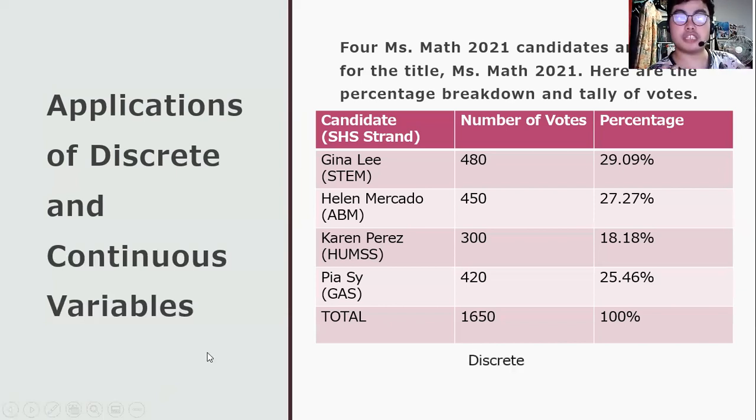The number of votes is discrete. Why? Because votes are made by people and each of the votes is being described by whole numbers only. While the percentage is the continuous variable because it is described with decimals. That's why it's a continuous variable.